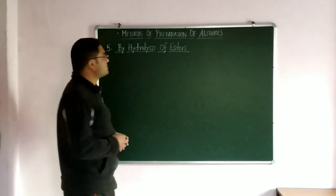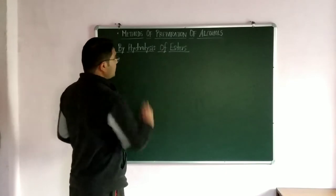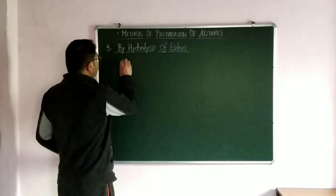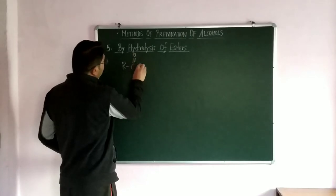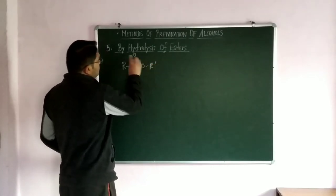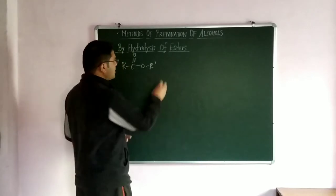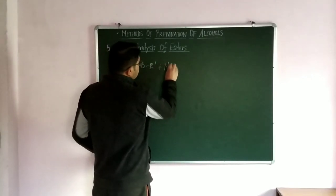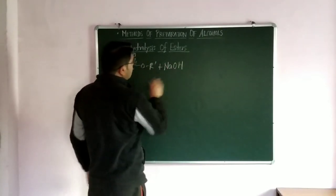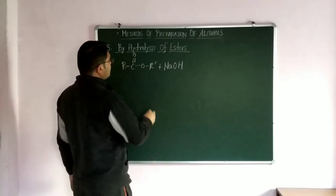Now the next method is by hydrolysis of esters. Since the formula for esters is RCOOR', when the hydrolysis of esters with alkali, alkali like NaOH and other bases, when it is treated with NaOH.